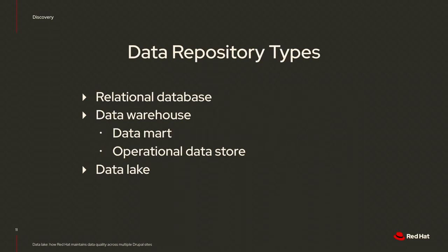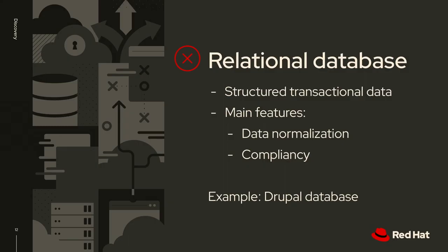In the discovery process to find a solution meeting those requirements, there are five different data repository types. Datamart and Operational Datastore fall under Data Warehouse since they're closely related — a Datamart is a smaller-scale version of a data warehouse, and the Operational Datastore feeds temporary data into the data warehouse. These weren't covered in particular detail.